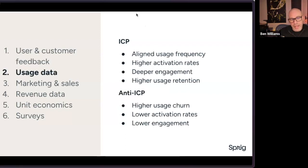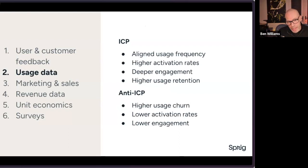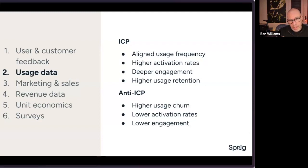The next area is usage data. PLG companies appreciate the importance of instrumenting their products to uncover valuable behavioral insights. Delve into quantitative data to ask and answer questions like: who is using the product in a manner most aligned with the natural problem frequency? Who's activating at higher rates? Who's engaging with the product most deeply? Who's retaining best over the long term? And for the anti-ICP, think about the inverse — look for negative patterns. Where is usage-based churn most prevalent? Which segments have lower activation or lower engagement?